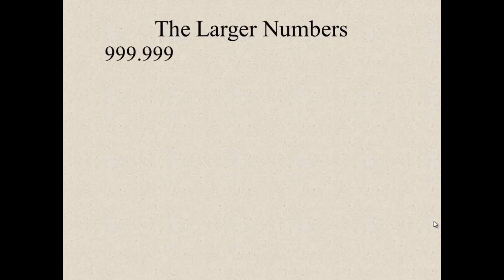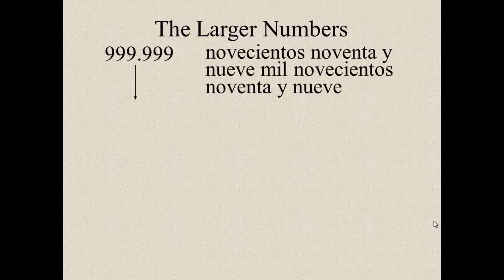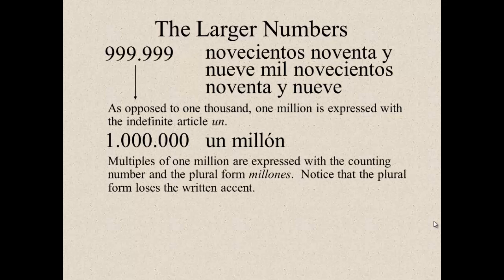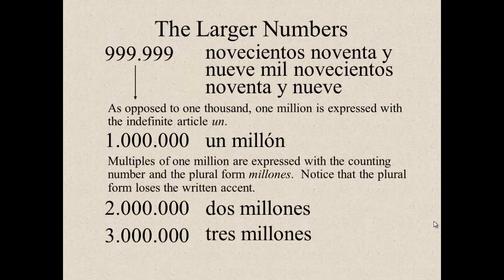All right, the larger numbers. Let's get into those higher numbers. So if we're wanting to say nine hundred and ninety-nine thousand, nine hundred and ninety-nine in Spanish, this is what it would look like. Novecientos noventa y nueve mil novecientos noventa y nueve. As opposed to one thousand, one million is expressed with the indefinite article un. So we just say thousand in Spanish, you just say mil. But when you get to a million, you have to say un millon. Multiples of one million are expressed with the counting number and the plural forms of millones. So once you get higher than one million, you have to say dos millones. Once it's plural, it loses its accent. And tres millones. So there you go.